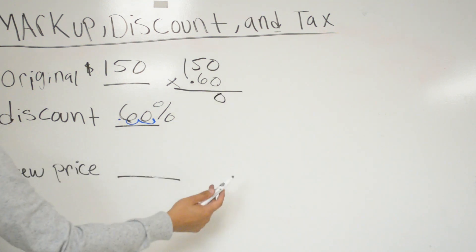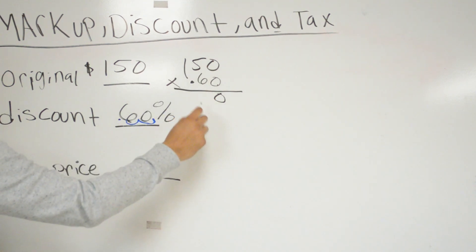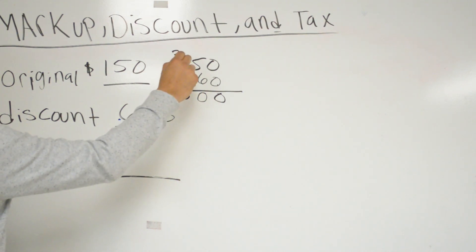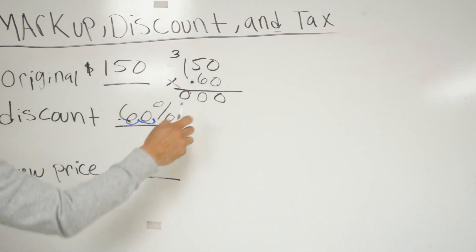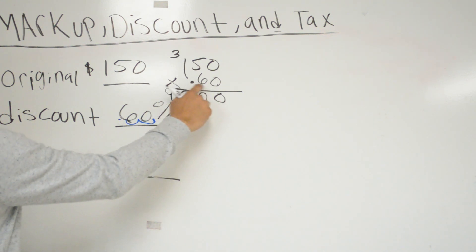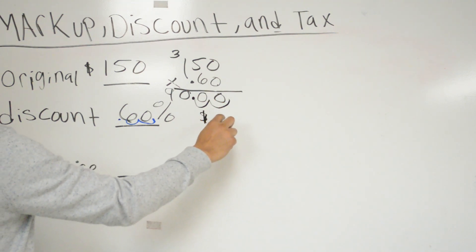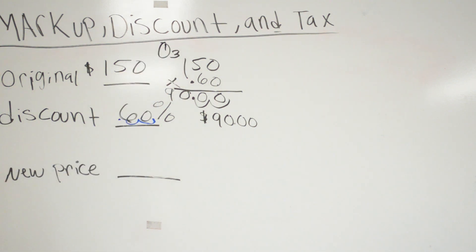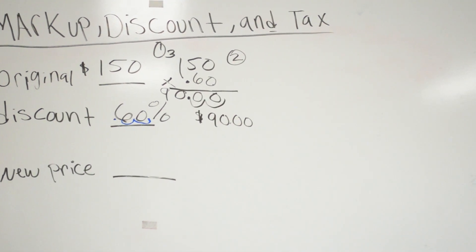We multiply 150 times 0.60 because 60% is the discount. Zero times anything is zero; zero times 6 is zero; 6 times 5 is 30 — carry the 3; 6 times 1 is 6 plus 3 is 9. Moving the decimal two places, the discount is $90.